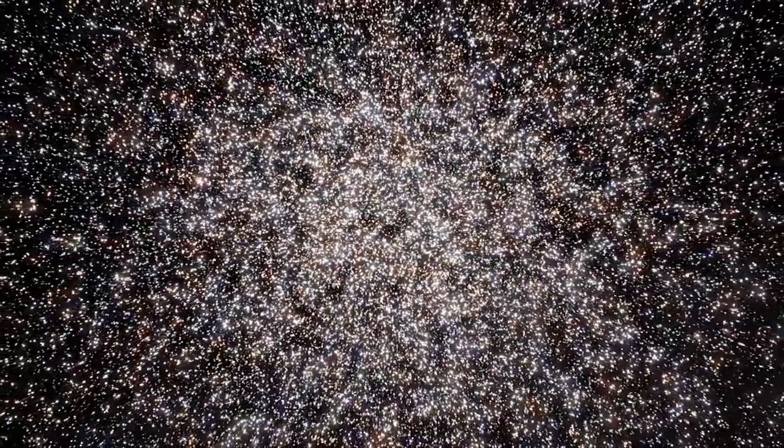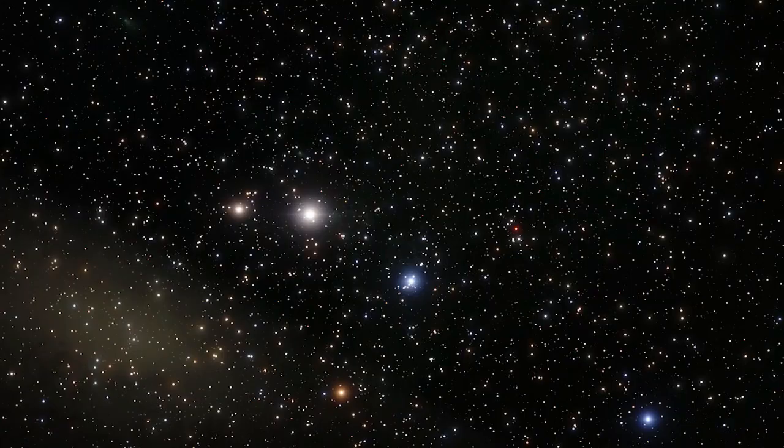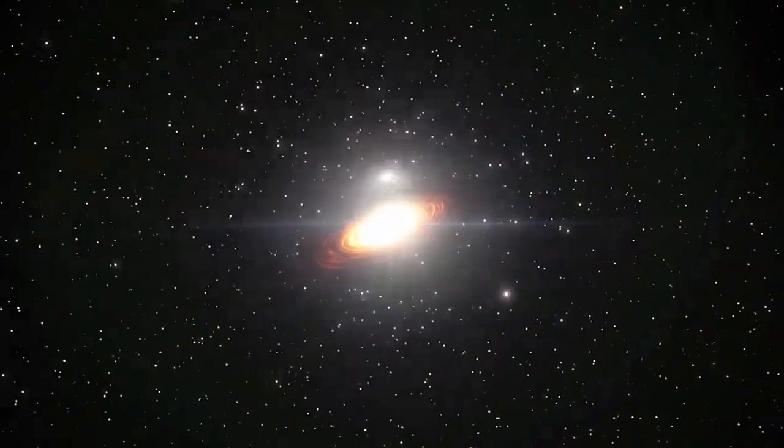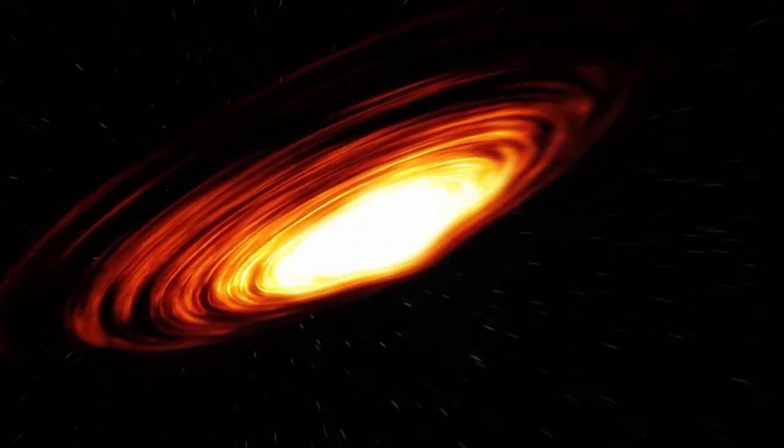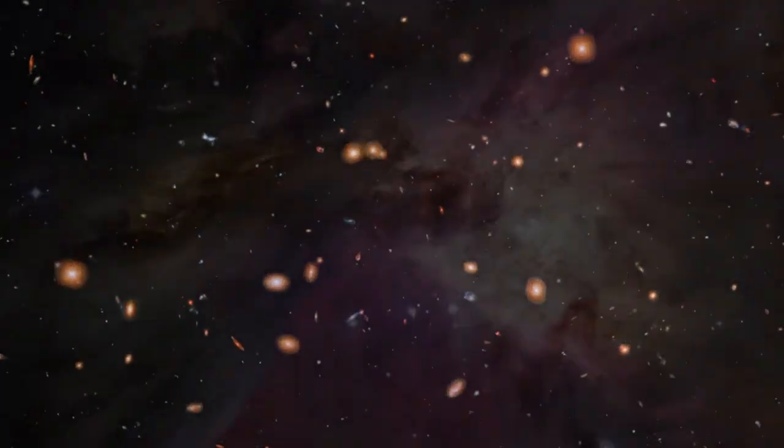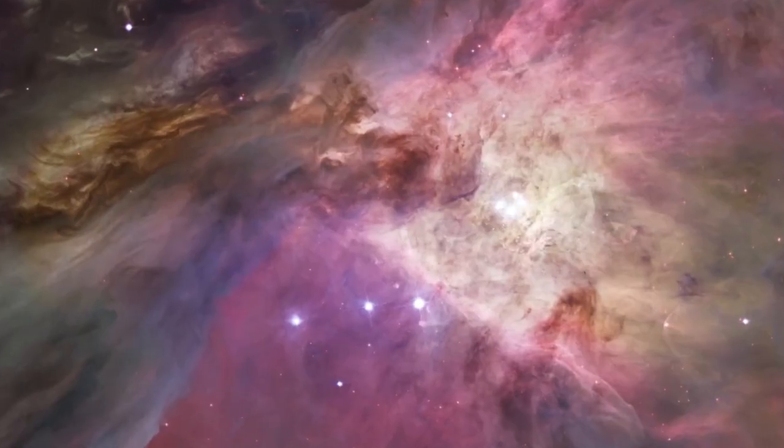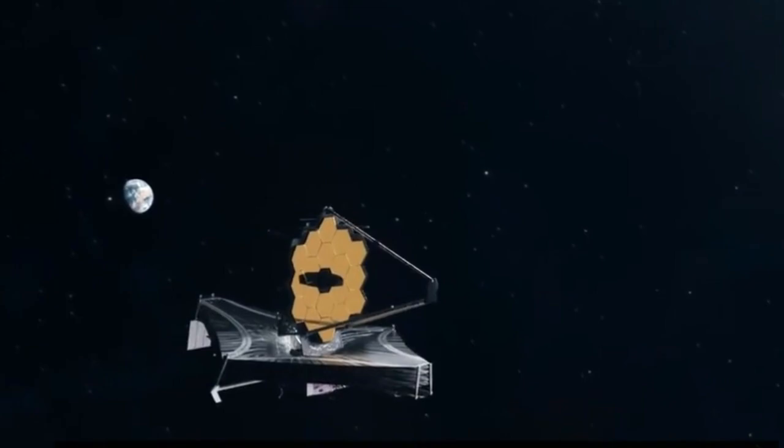These protoglobular clusters represent the earliest stages of what will eventually become the mature globular clusters we see today. Modern globular clusters are spread throughout the halos of galaxies, but these proto-versions remain embedded within their host galaxy, the Cosmic Gems Arc. They function as cosmic nurseries where star formation happens with extraordinary intensity, like bees swarming frantically around a hive. Thousands of stars form in highly confined spaces.